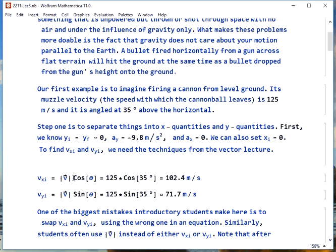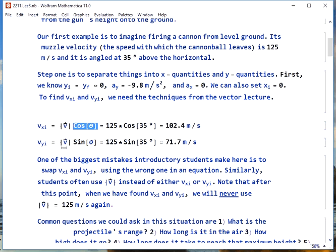So we take the muzzle velocity, multiply it by cosine of theta, to get the Vx initial, 102.4 meters per second. Then muzzle velocity times sine theta to get the Y velocity, the initial Y velocity, 71.7 meters per second.